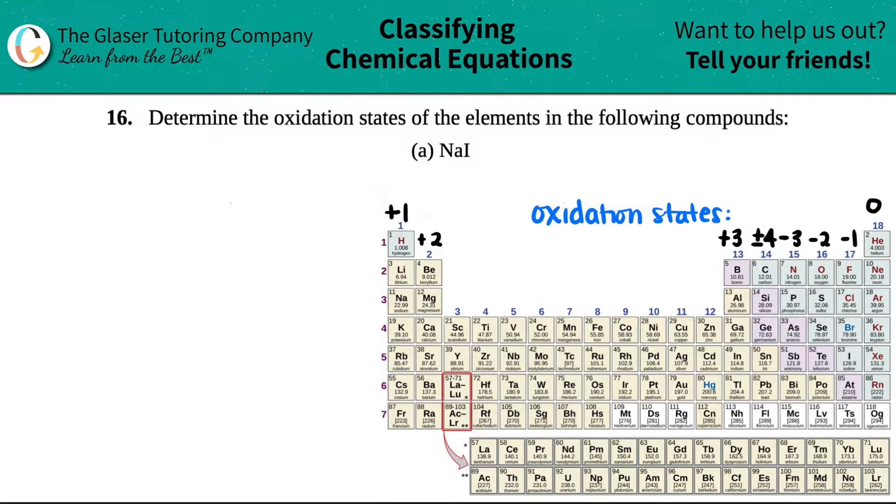Number 16: Determine the oxidation states of the elements in the following compounds. We need to find the oxidation states of each individual element. We need to do it for sodium, which is Na, and then iodine, which is I.